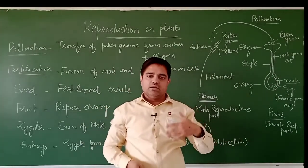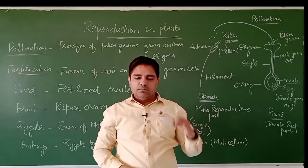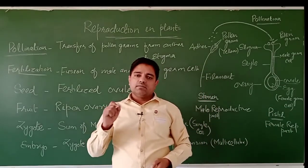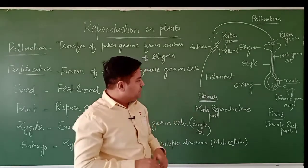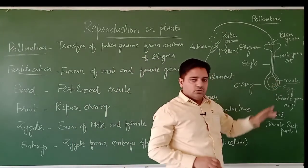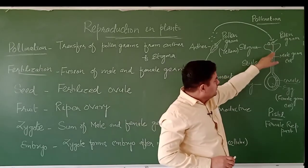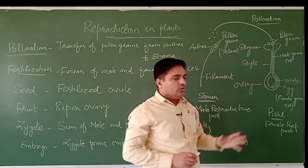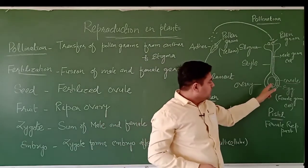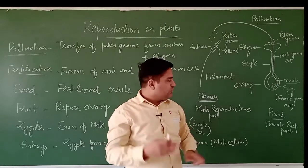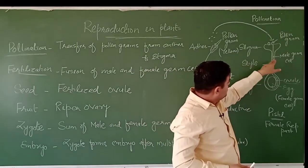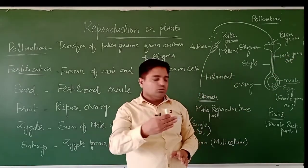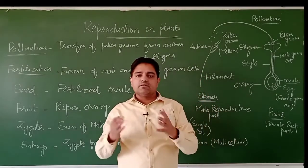In the ovary region, there is a structure known as the ovule. Inside the ovule are the female germ cells, which are also known as the egg. This pollen tube penetrates the ovule and delivers the male germ cells inside the ovule.